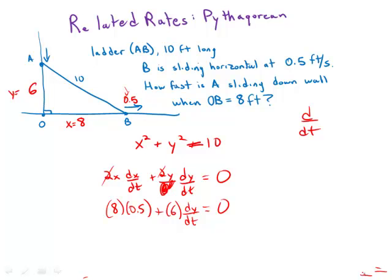So moving that to the other side of the equation, we get 6 dy/dt equals negative 4, and then from there dy/dt equals negative 4/6 or negative 2/3.